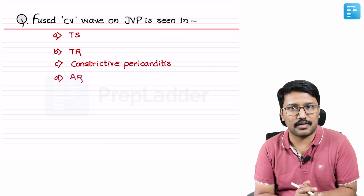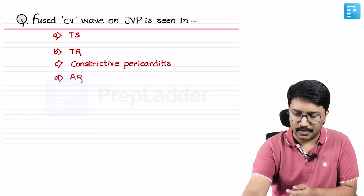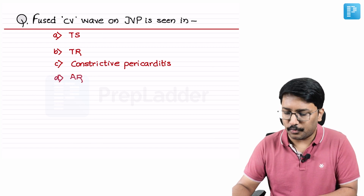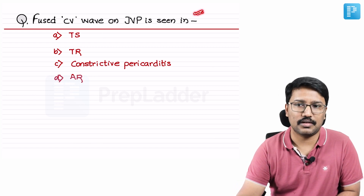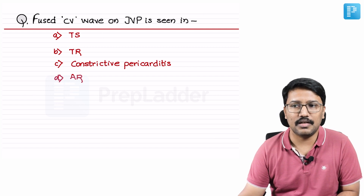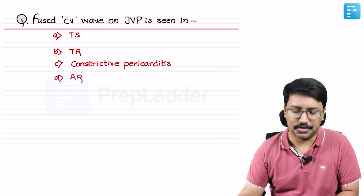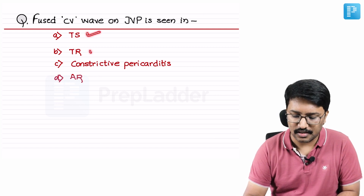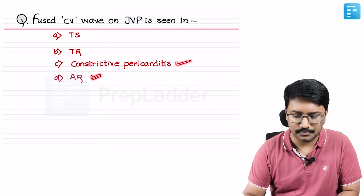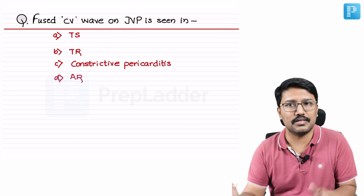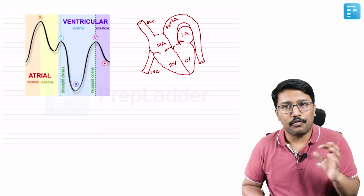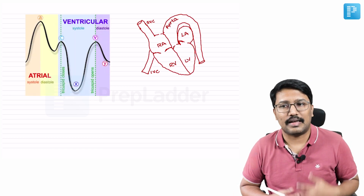Now let me take you through some important MCQs. The first MCQ: fused CV waves on JVP is seen in which of the following conditions? Options are tricuspid stenosis, tricuspid regurgitation, constrictive pericarditis, and aortic regurgitation.